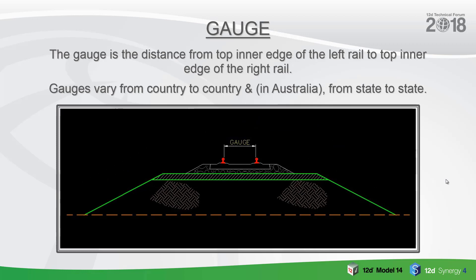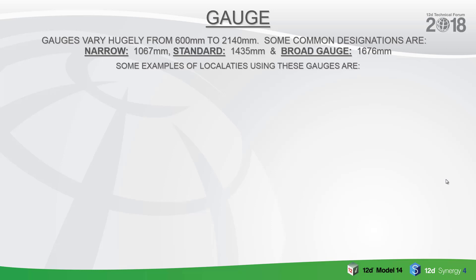The gauge is the distance from the top inner edge of the left rail to the top inner edge of the right rail. The gauges vary from country to country and, for example in Australia, from state to state. The gauges vary hugely from 600 mm — sometimes smaller, particularly if you're talking about model railways — to 2140 mm.